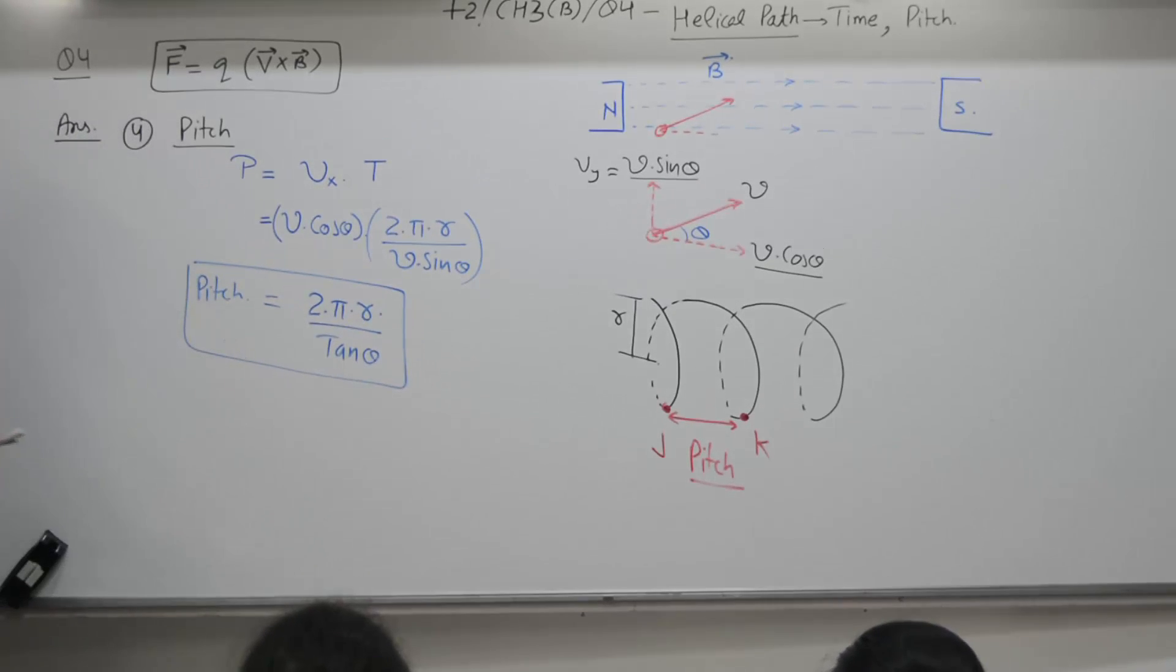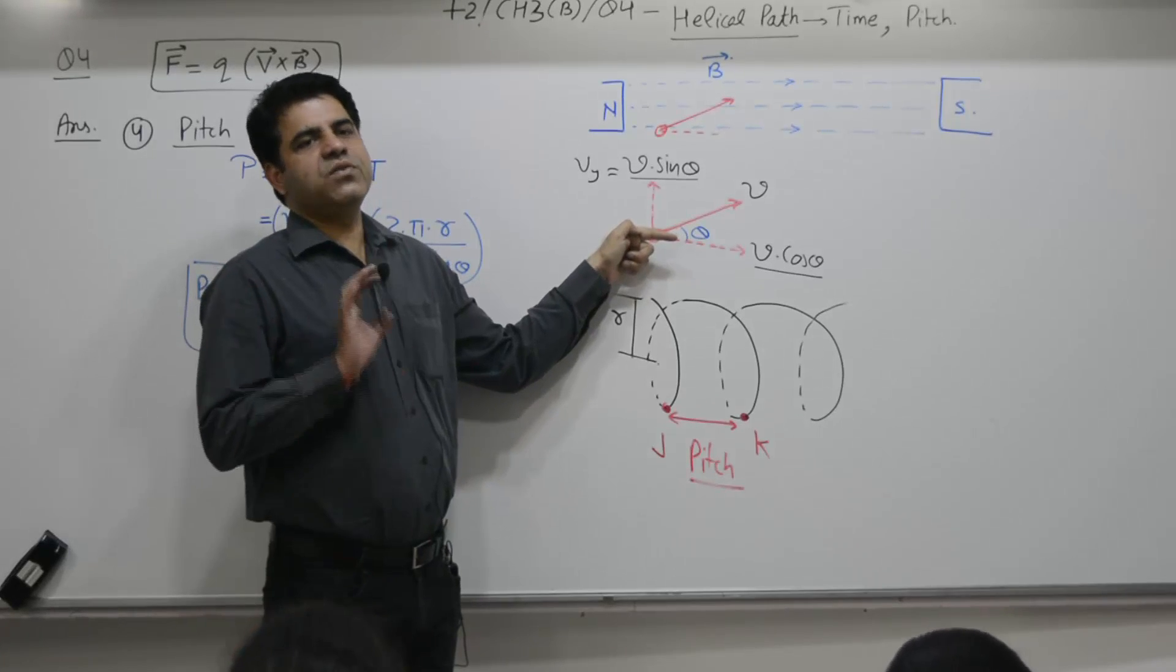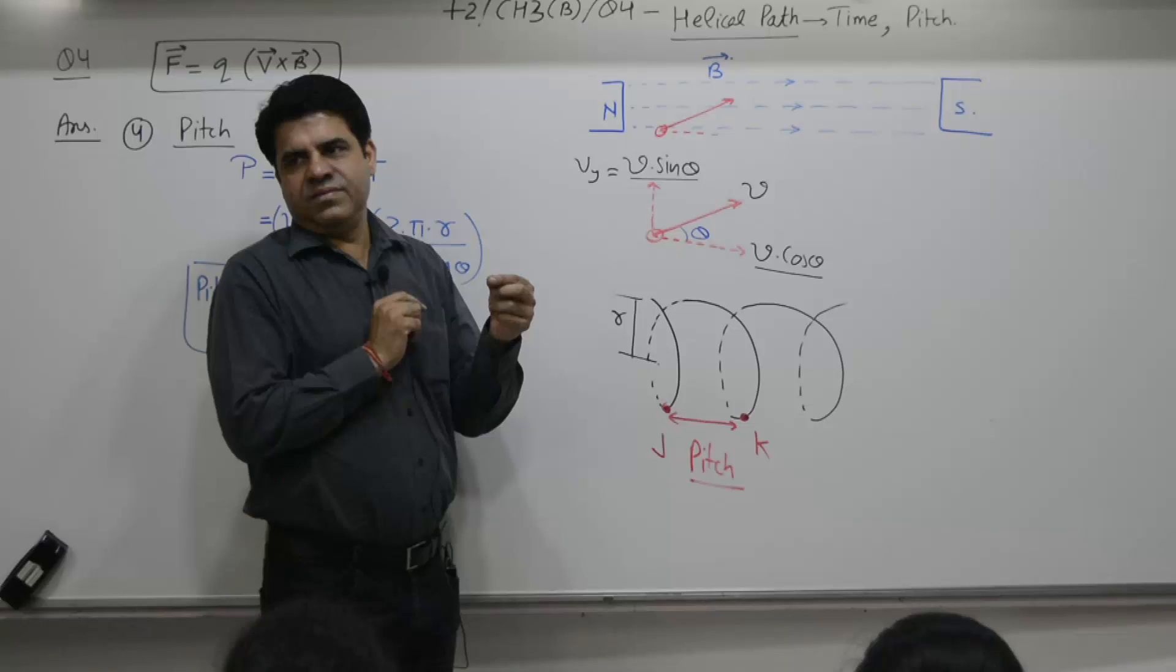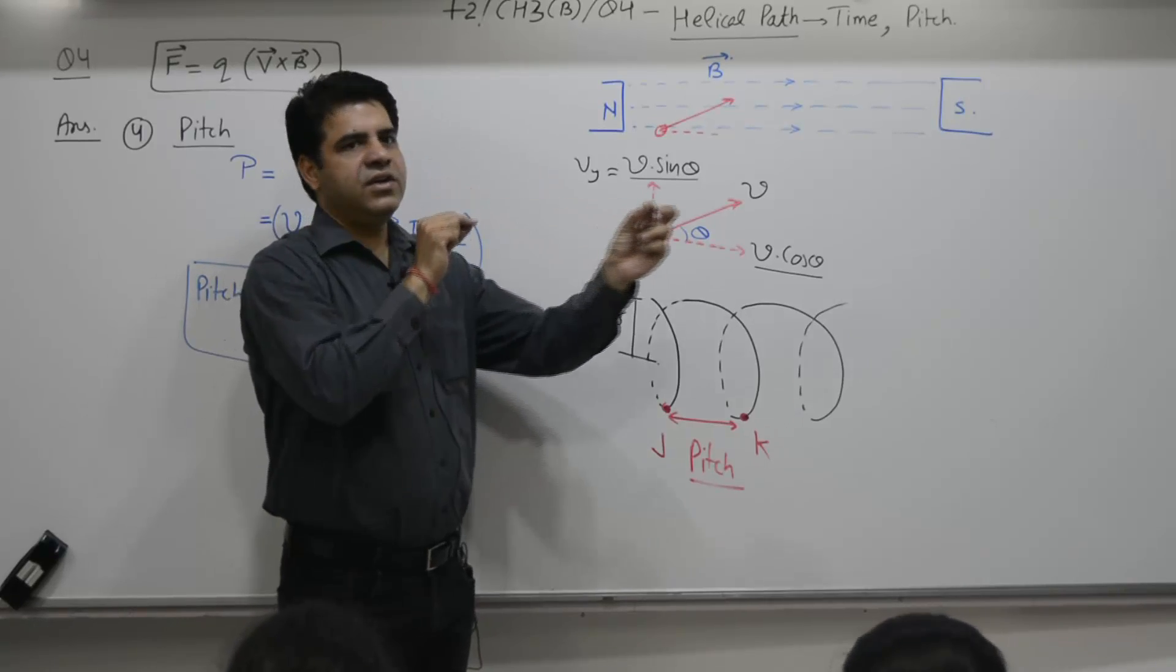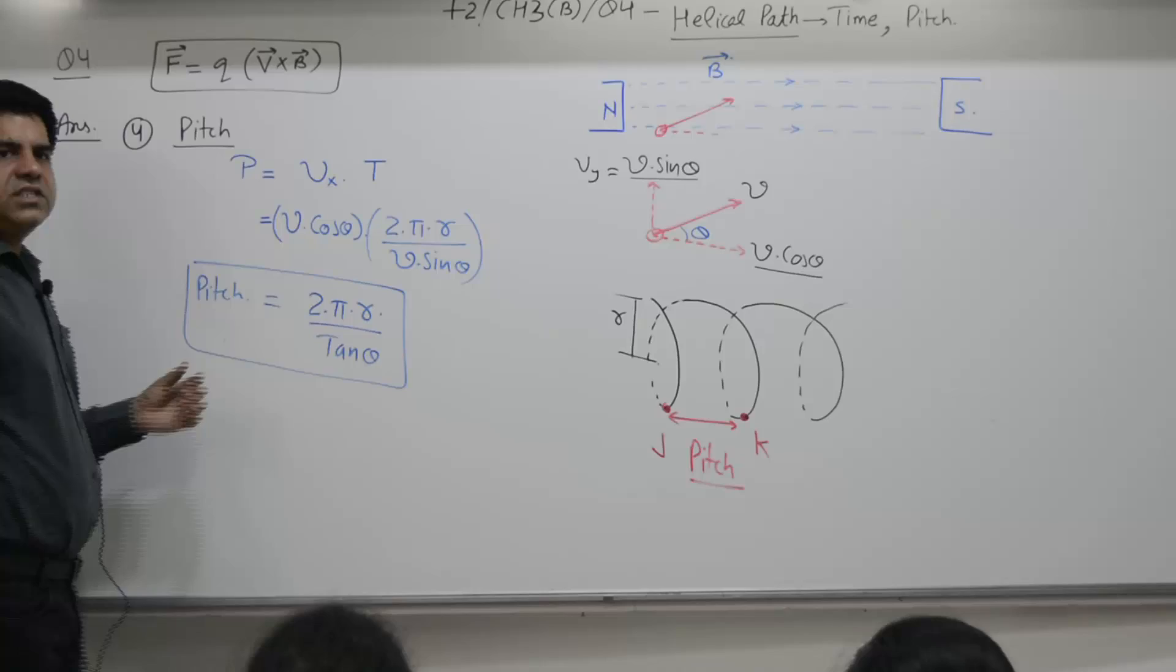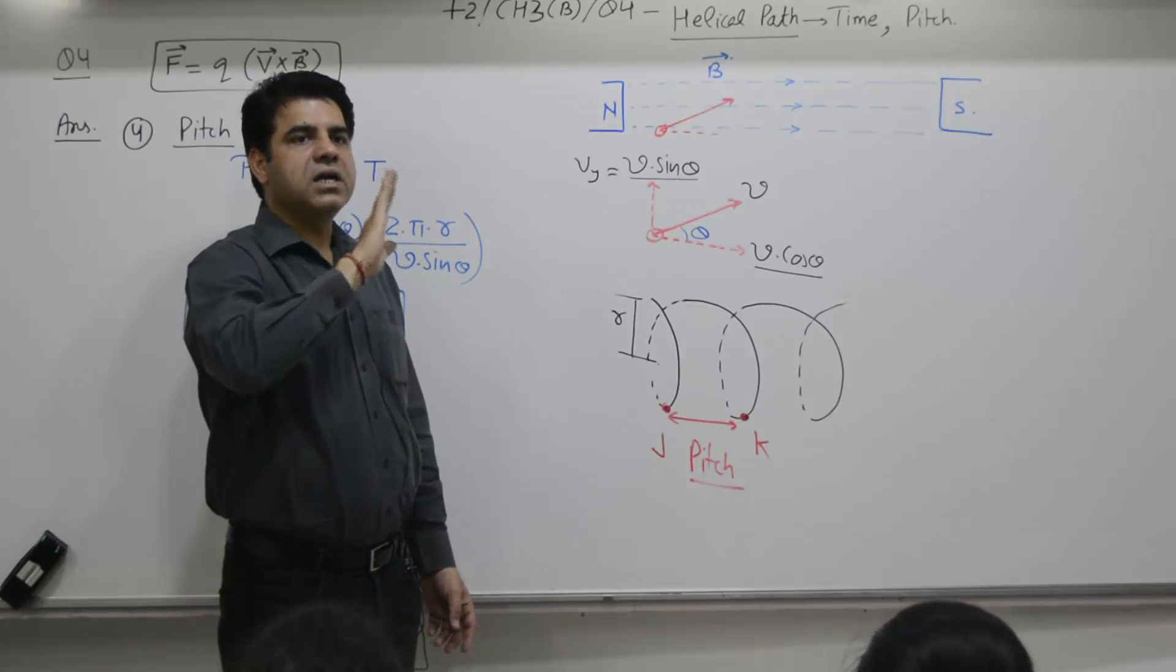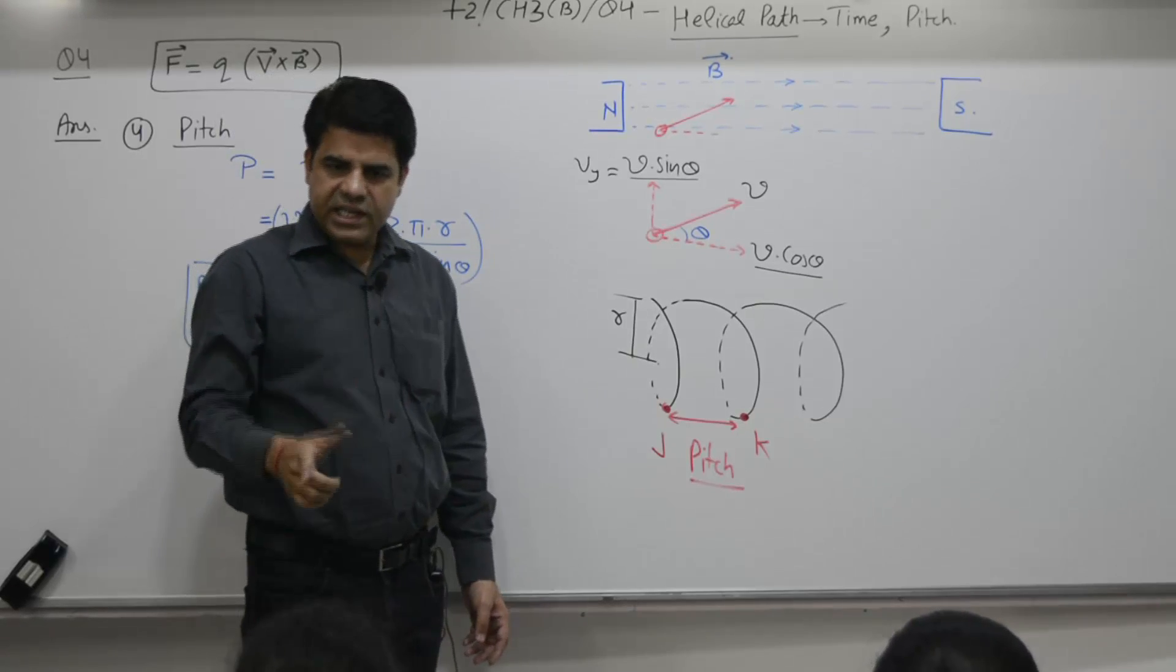If theta is equal to 0, it is not defined for this case, because it will not trace a helical path. If theta is equal to 90 degree, then the particle will keep on moving in a circle, will not cover any horizontal path. Tangent 90 is infinity, 2 pi r by infinity is 0. So, if the particle enters the magnetic field perpendicular, it will trace a circle, but it will not trace helical path, in that case, pitch is 0.